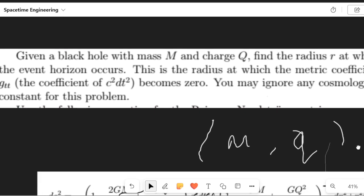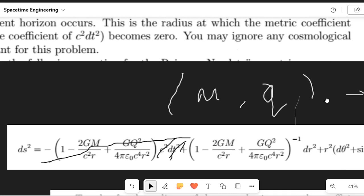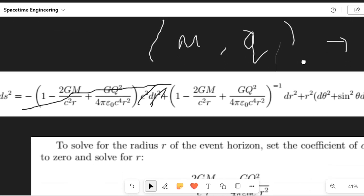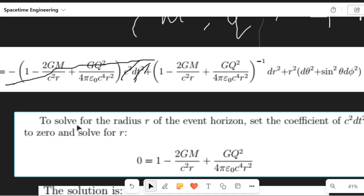But I'm going to kind of show you what the solution would look like. So, we would employ the Reissner-Nordström metric, right? And we'd get rid of this term here, because dt goes to zero. And, just kind of walking through the solution. I'm not gonna, you don't have to work this out if you don't want to. But, to solve the radius R, the event horizon, set the coefficient of this equal to zero and solve for R. Okay? So, we did that.